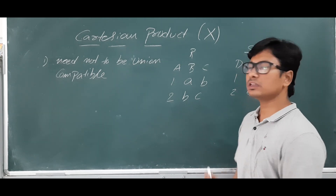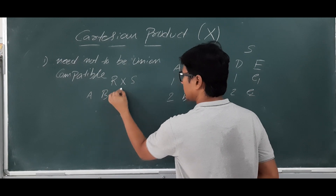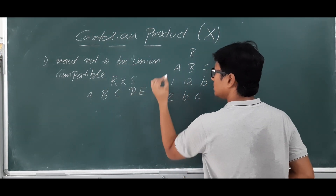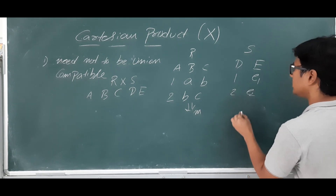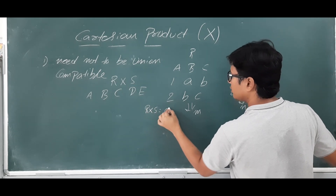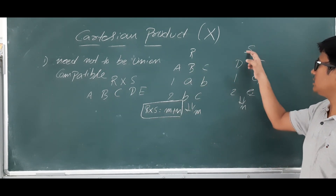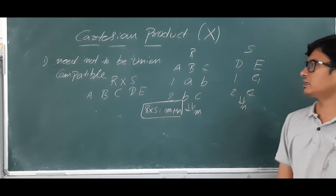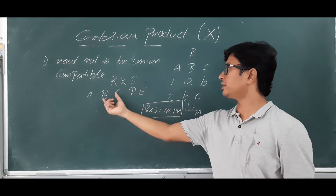When you apply R Cartesian product S, the resulting relation contains all attributes from R followed by all attributes from S. If the degree of relation R is m and the degree of relation S is n, then R Cartesian product S will have degree m plus n. For example, if R has degree 3 and S has degree 2, the result has degree 5.